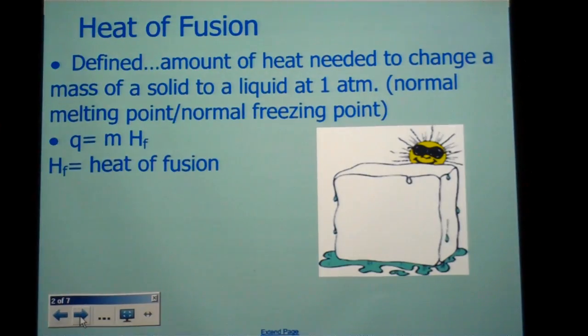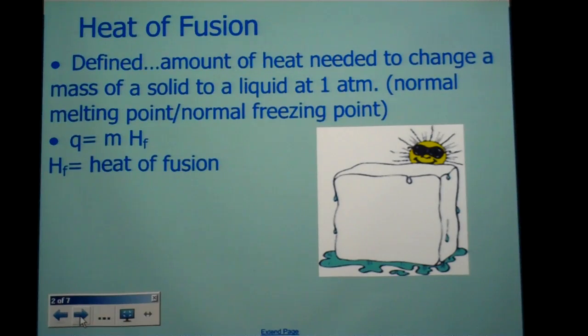Here we go. Definition is the amount of heat needed to change a mass of a solid to a liquid at one atmosphere. So basically what I want to do is melt something and how much energy do I need to do that? We're talking about melting and freezing, which is the same temperature. There's an equilibrium that occurs at that point. That's the flat part of the graph, that plateau part on the heating curve.